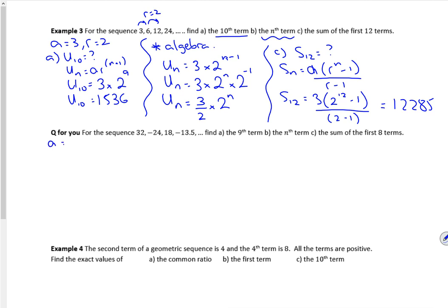So we know a is 32. I told you that r was a term divided by the one before there. So if you do that in your calculator, it's minus three quarters. That's right then.